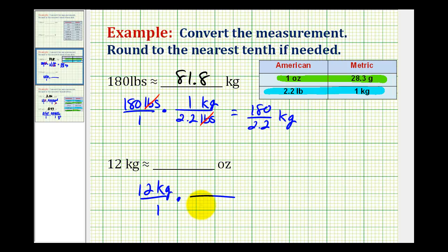So again, 1 kilogram is equal to 1,000 grams. Notice how by putting the kilograms in the denominator, the units of kilograms simplifies out, and now we have grams, and so we can use another unit fraction to do the conversion from grams to ounces.